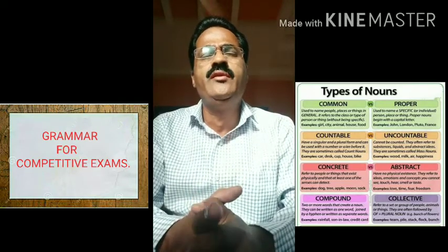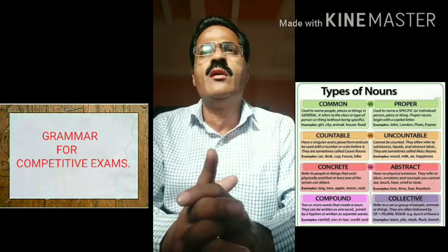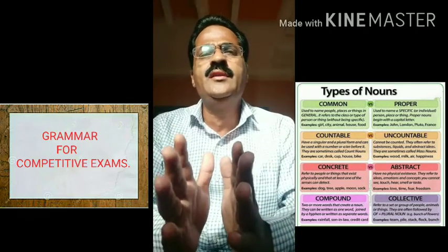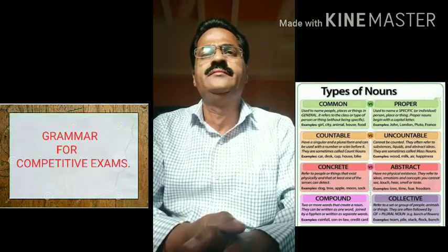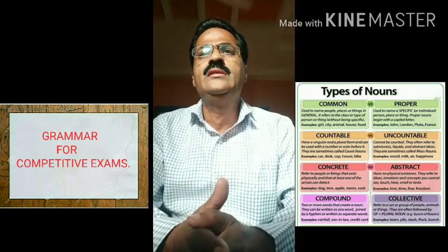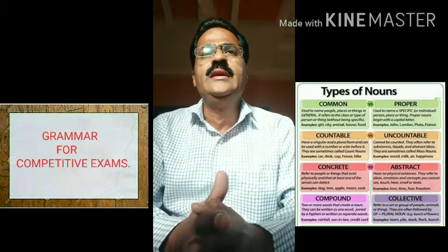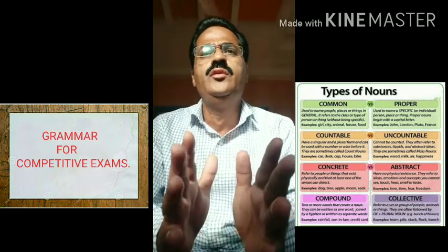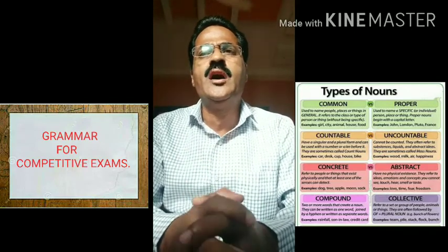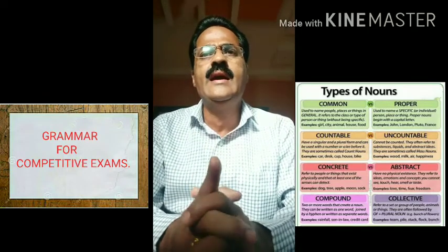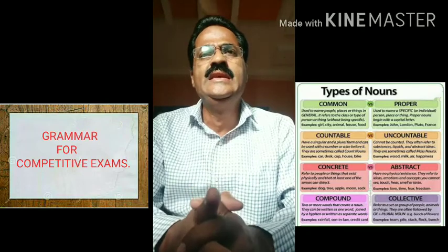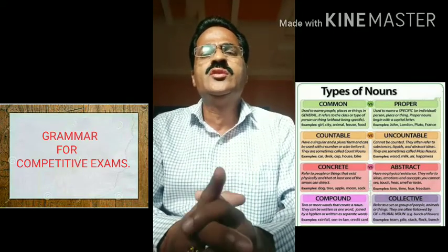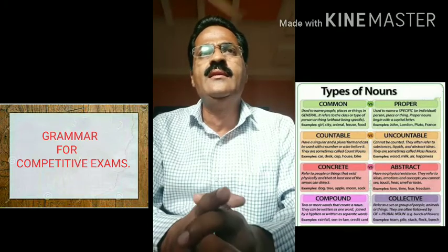Proper nouns help to distinguish a specific person, place, or thing. These words should be capitalized. Some nouns can be either proper or common depending on the context. One way you can treat a common noun as a proper noun is by using personification. Personification is giving human attributes to non-human objects or ideas. Abstract nouns are intangible ideas — they are not things people can see, smell, hear, or touch. Common examples include emotions, social concepts, political theories, and character traits.